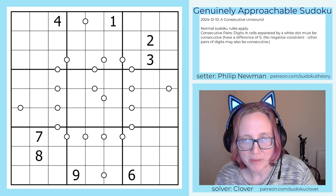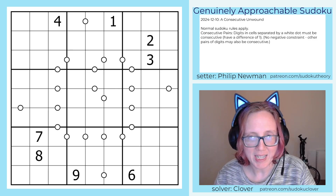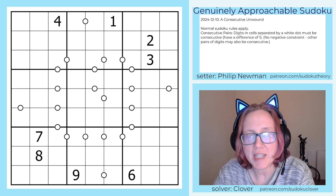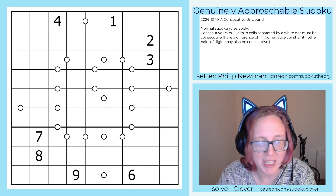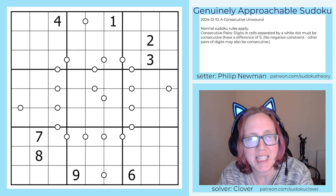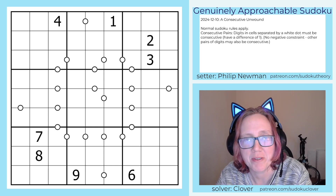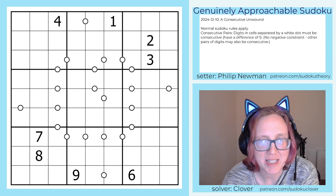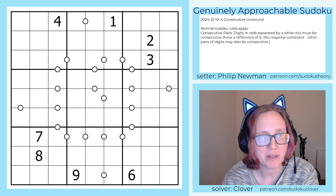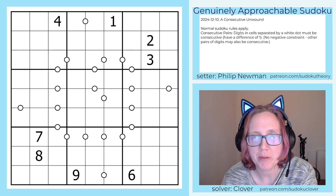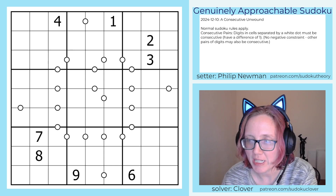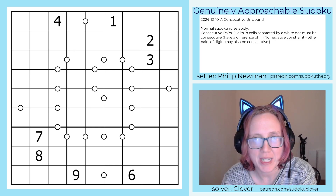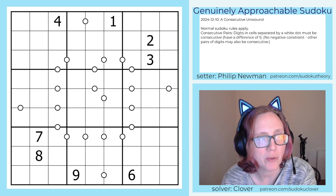Hello, my friends. I'm Clover, this is Gass, and today we are solving 'A Consecutive Unwound' by Philip Newman. This is a consecutive pair Sudoku. It was posted originally on December 10th, 2024.